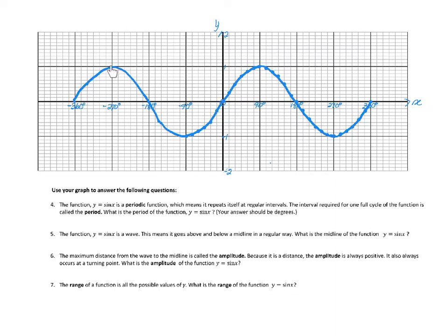Starting from another point: go down to 0, down to negative 1, up to 0, and then up and starting again. It doesn't matter where you look at it — you will always get the period of y = sin x as being 360 degrees.